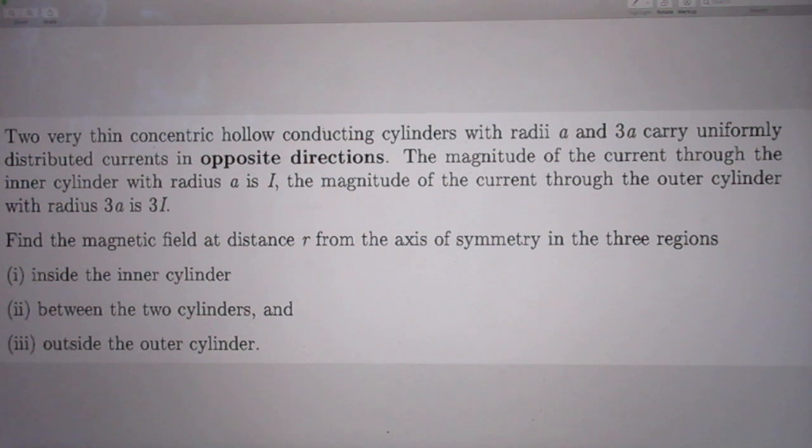Find the magnetic field at distance R from the axis of symmetry in the three regions. So there are three questions. Question 1 is inside the inner cylinder. Question 2, between the two cylinders. And question 3, outside the outer cylinder.